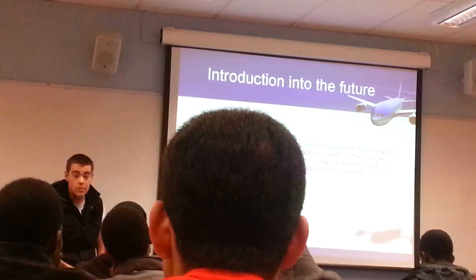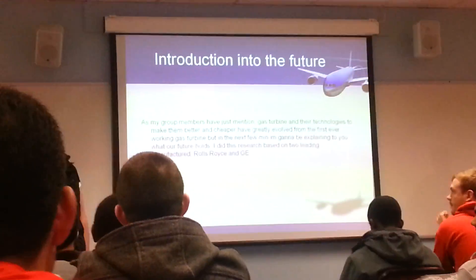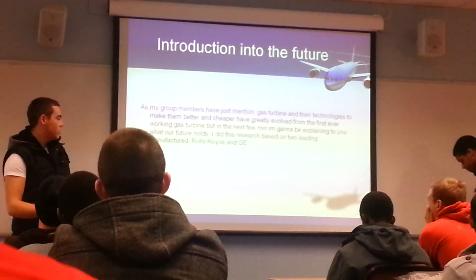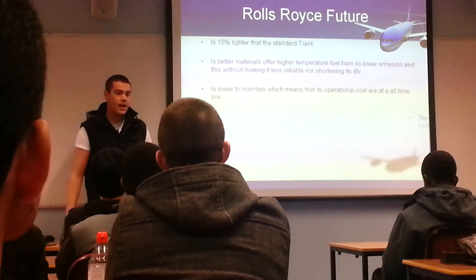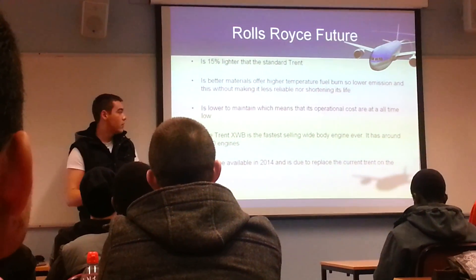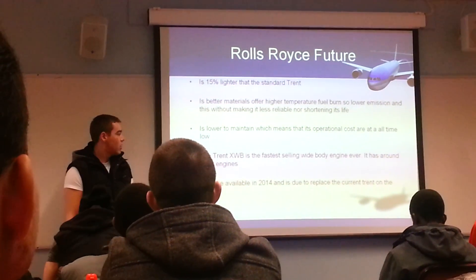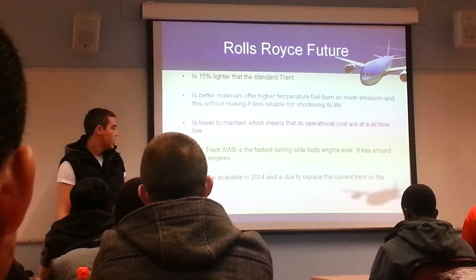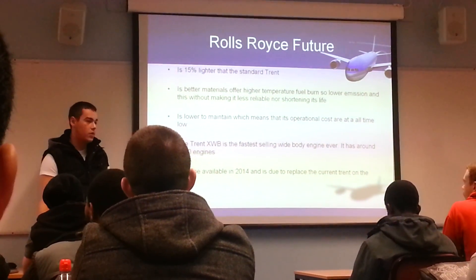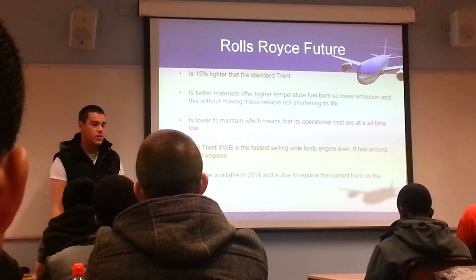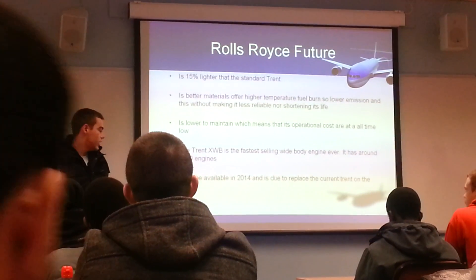Looking at the future, research is based on two leading manufacturers, Rolls-Royce and GE. From Rolls-Royce, the XWB engine is 15% lighter than the standard Trent 900, offers higher temperature fuel burn for cleaner emissions, and has lower maintenance costs. It is the fastest-selling wide-body engine ever, with 1,100 units sold to 40 customers, and was set to be available in 2014 to replace the Trent 900 on the A380.